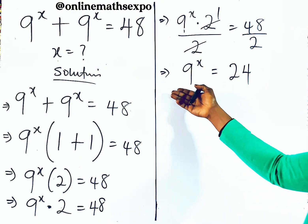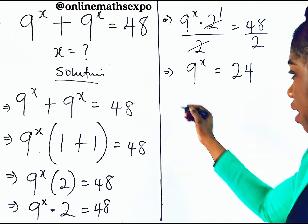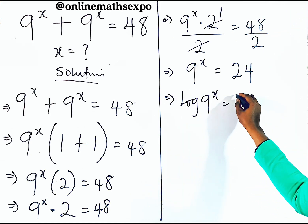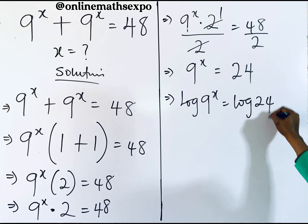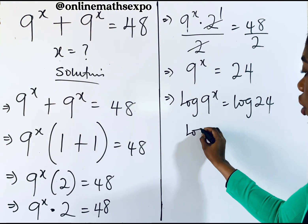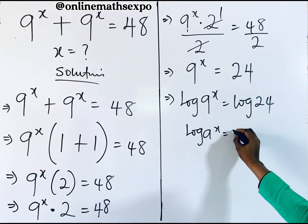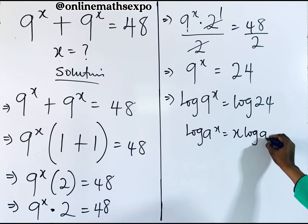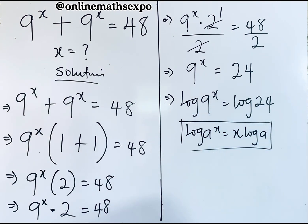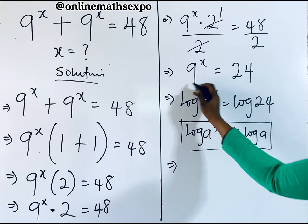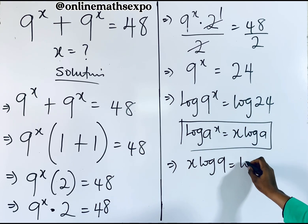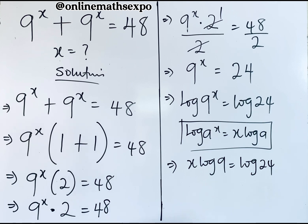Now take the logarithm of both sides, giving us log of 9 to the power of x is equal to log of 24. Remember, for every log of a to the power of x, it is x times log a. This rule guides us on the left side, so we have x log 9 is equal to log 24.